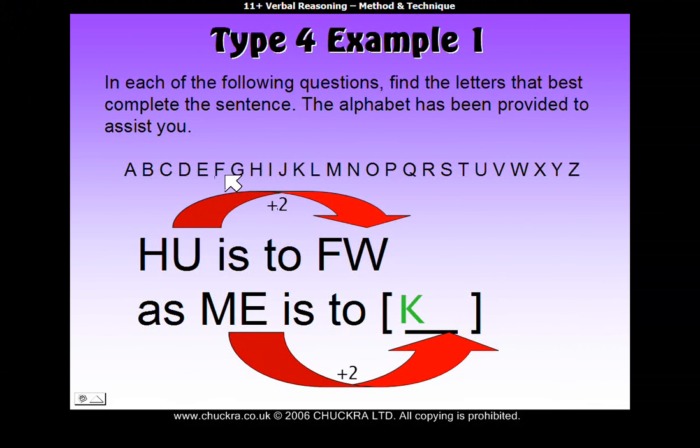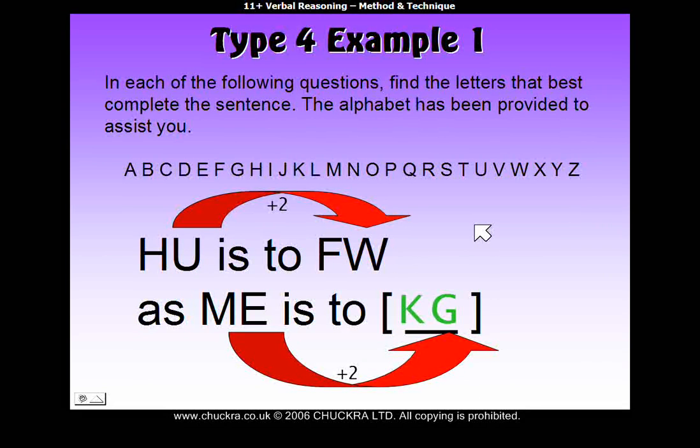So from E, 1, 2, forward becomes G. So the answer is K, G. And it's as easy as that.